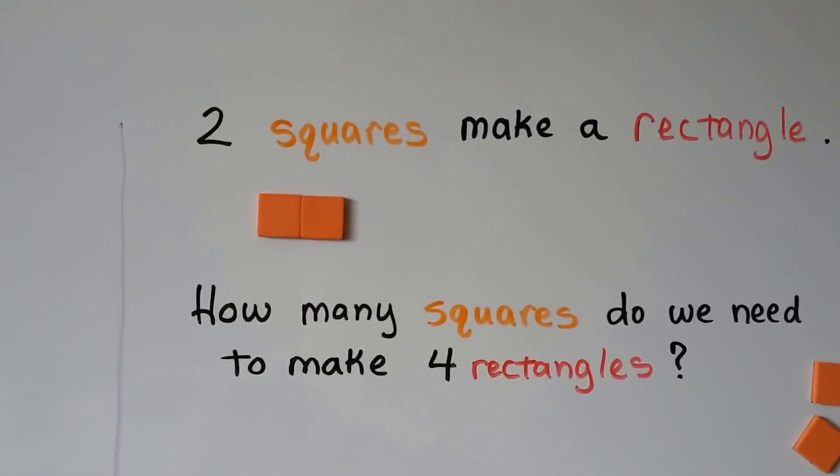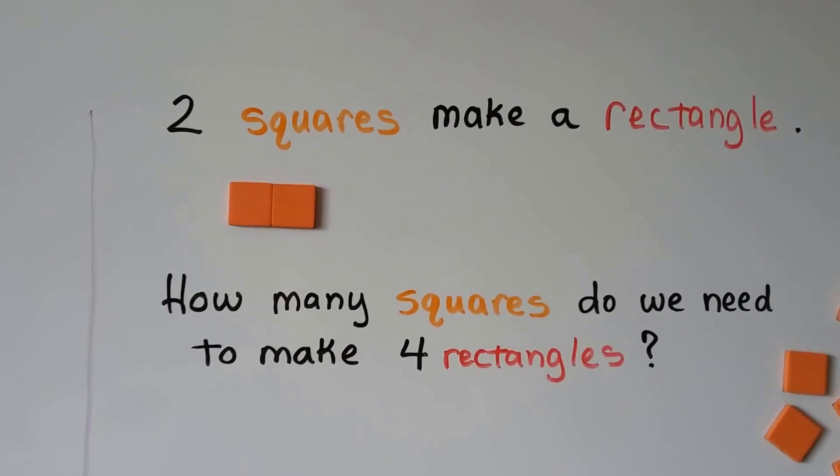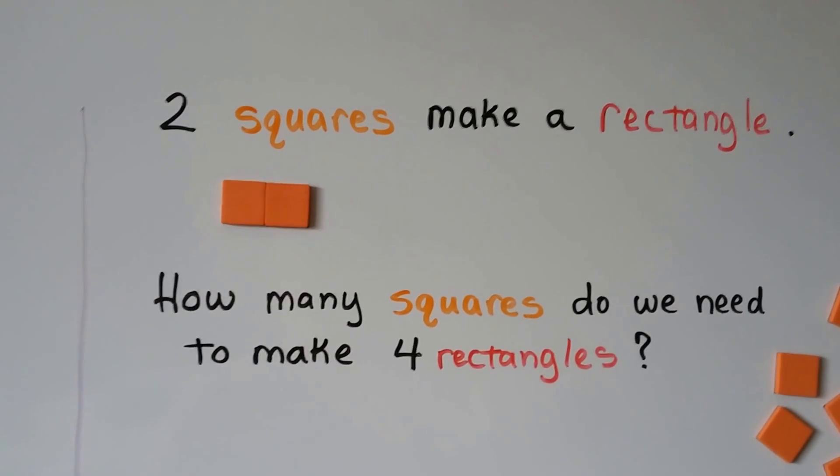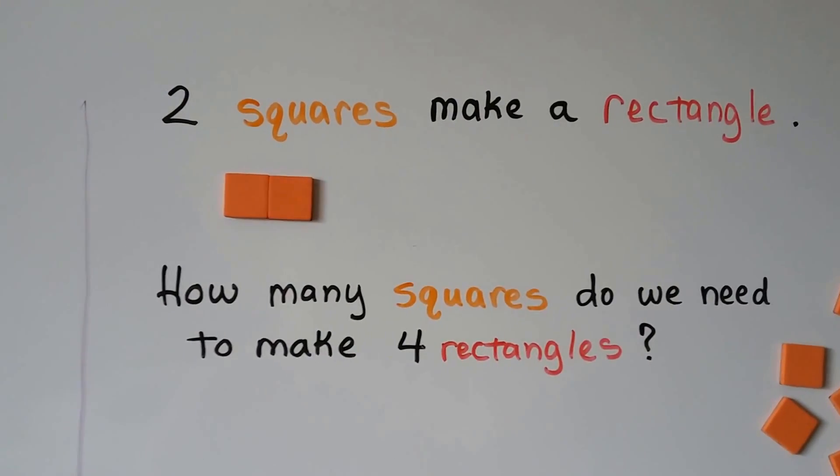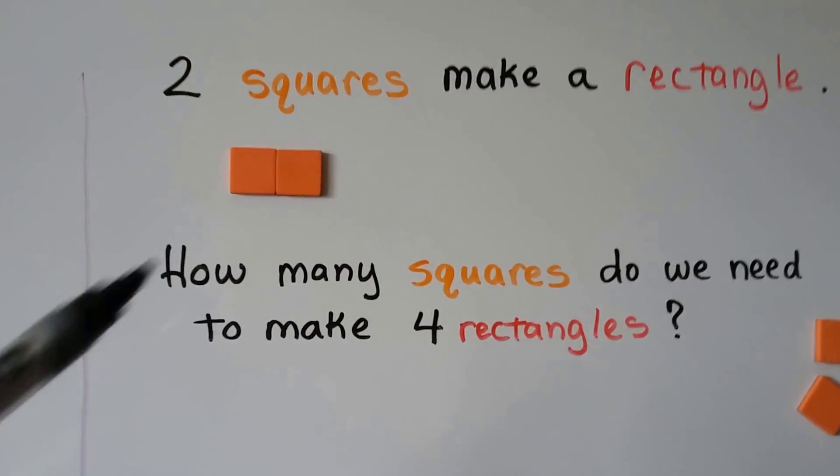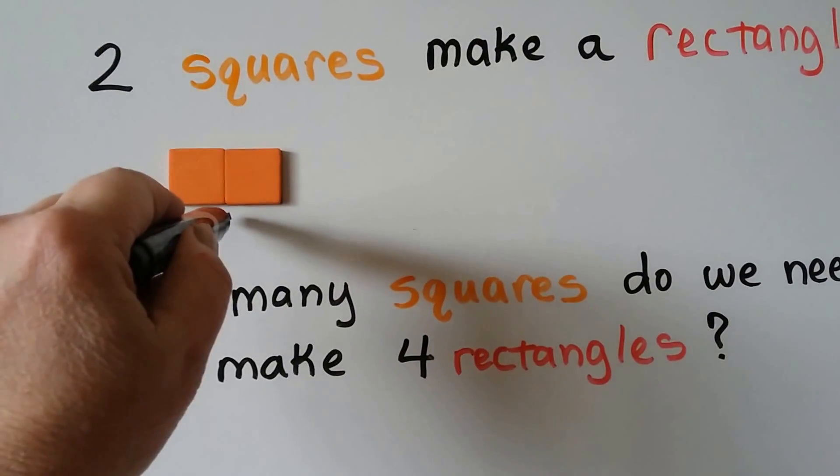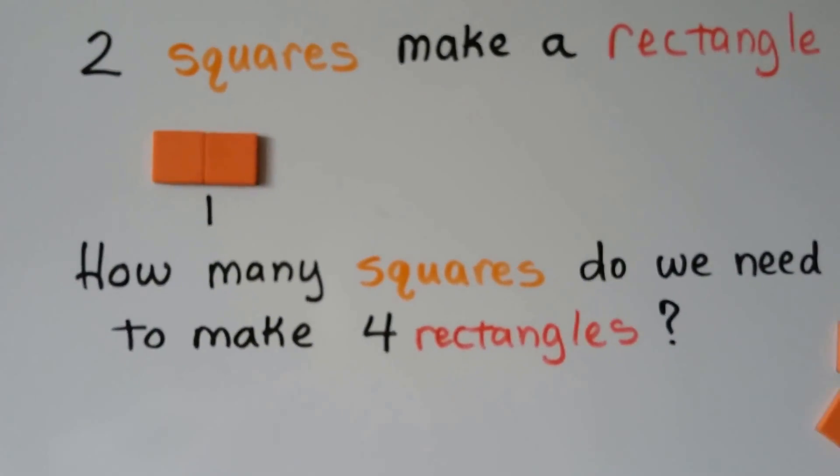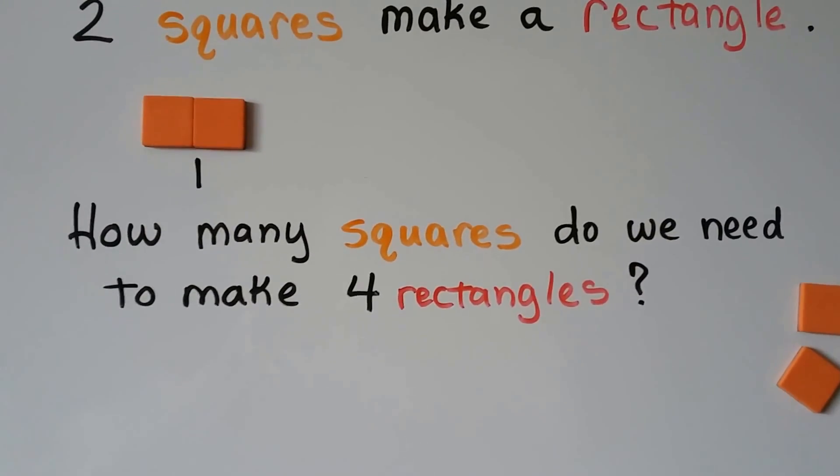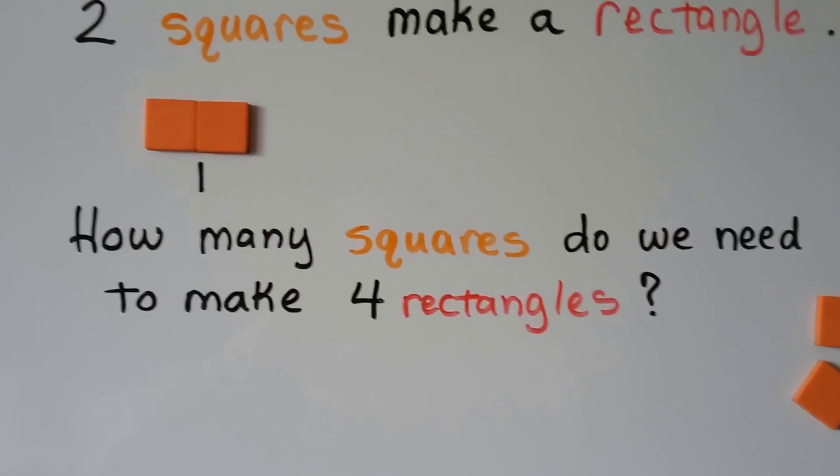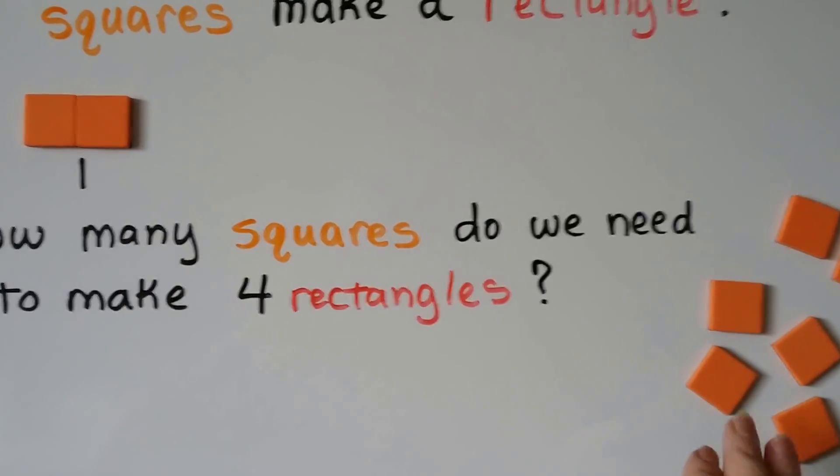Two squares make a rectangle. We have two squares and they're making a rectangle. So how many squares do we need to make four rectangles? Well, if two of them makes one rectangle, we need to make four of them. Well, let's count and find out how many squares we need, and we'll build some rectangles. I have some squares here.